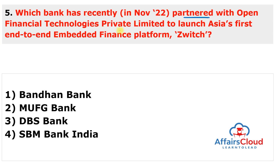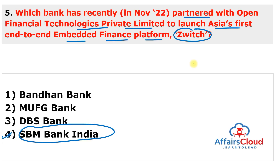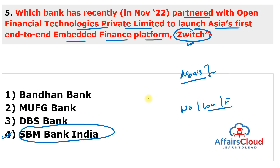Question 5: Which bank partnered with Open Financial Technologies Private Limited to launch Asia's first end-to-end embedded finance platform known as ZAWICH? The answer is SMM Bank India. ZAWICH offers a no-code, low-code, and full-stack API solution enabling fintech companies to build their own financial products using ZAWICH's technology stack, which includes a drag-and-drop dashboard, low-code plugins, and 300+ APIs.